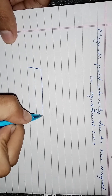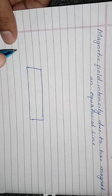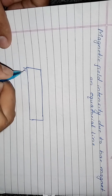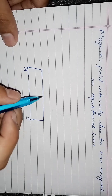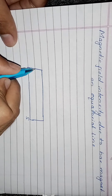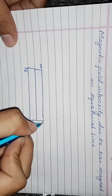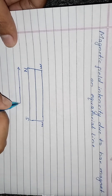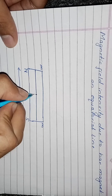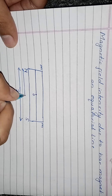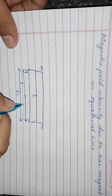So this is a bar magnet. I am going to show you the north pole and south pole. The length of the bar magnet is 2L, centered on the magnet. The distance from the center to each pole is L.